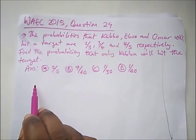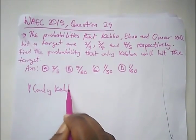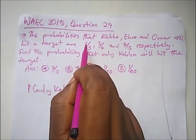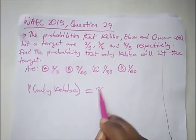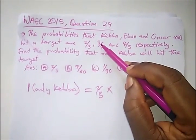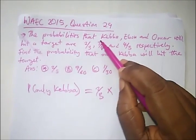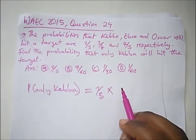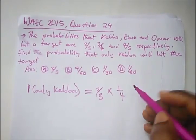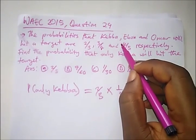So the probability that Keba will hit the target is 2 over 3, multiply by the probability of failure of Ebao. What is the probability? If we say 1 minus 3 over 4, this would give us 1 over 4. And multiply by the probability that Omar fails, which is 1 minus 4 over 5, giving us 1 over 5.